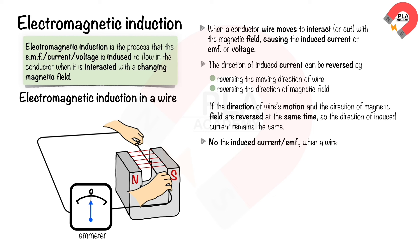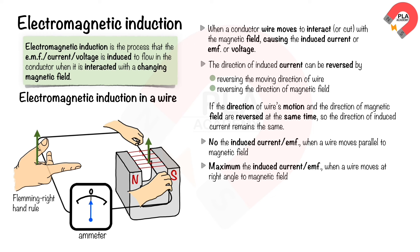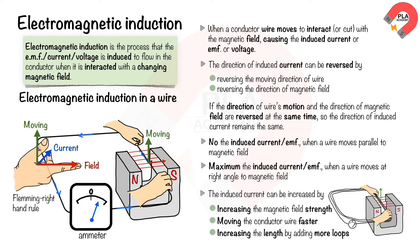No induced current occurs when the wire moves parallel to the magnetic field; maximum induced current occurs when the wire moves at right angles to the field. The direction of induced current can be determined using the Fleming right-hand rule: the thumb indicates the moving direction of the wire, the index finger indicates the magnetic field direction, and the middle finger indicates the current direction — all three fingers perpendicular to each other. The induced current can be increased by increasing the magnetic field strength, moving the wire faster, or increasing the length of the conductor wire in the field.